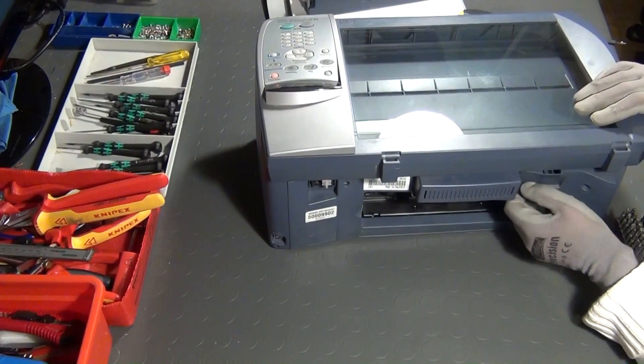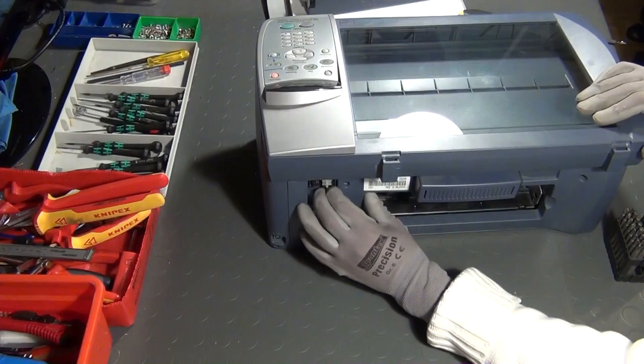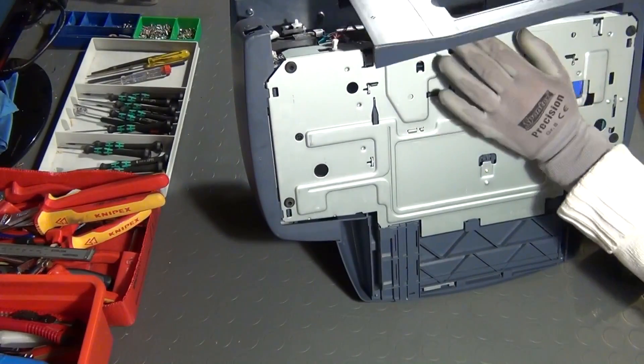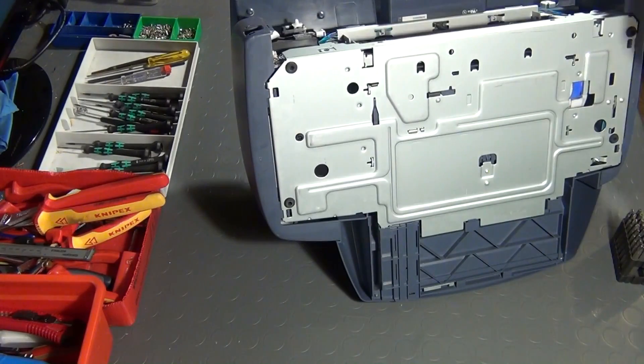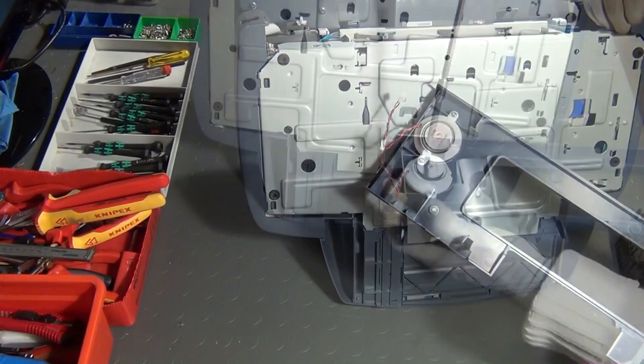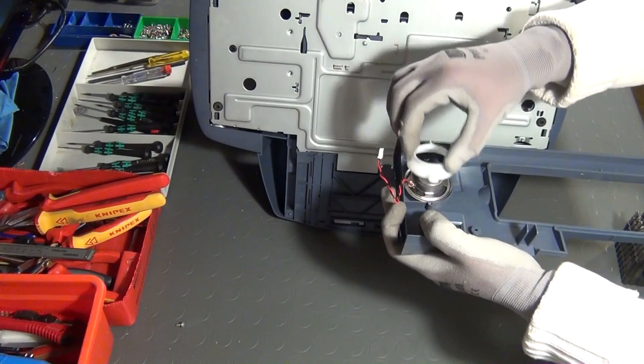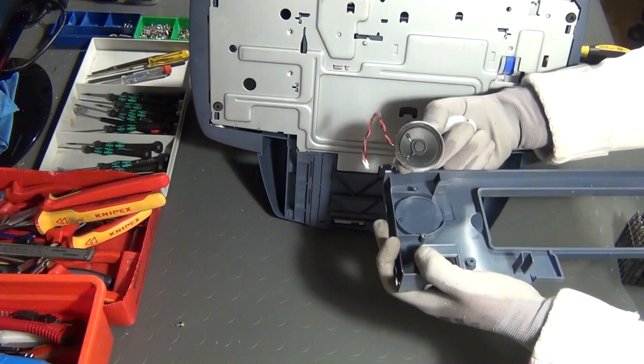With the screws removed, you can now try to pull off some of the plastic covers. This however rarely works without the use of some force. With some printers like this one, you can salvage a little loudspeaker from one of the plastic covers.